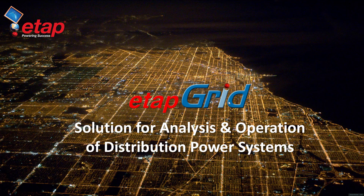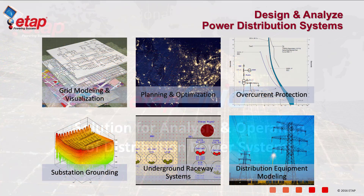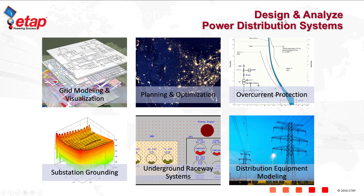This is a quick overview of ETAP Grid, a solution for analysis and operation of distribution power systems. ETAP Grid is used for the design and analysis of power distribution systems. It includes geospatial modeling and visualization integrated with network planning and optimization tools. It also includes a built-in overcurrent protection module, substation grounding, underground cable thermal analysis module, as well as distribution equipment specific modeling.